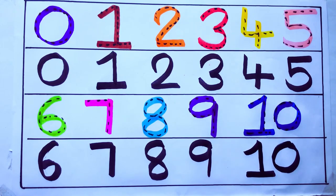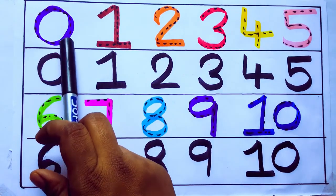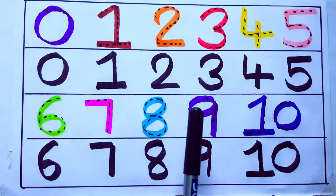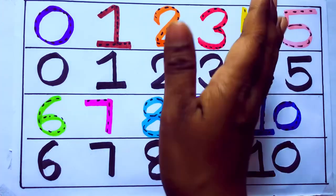Once again learning numbers: 0, 1, 2, 3, 4, 5, 6, 7, 8, 9, 10. Okay, bye kids.